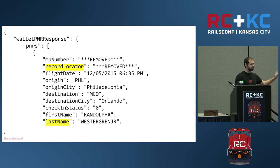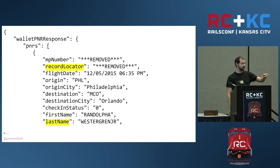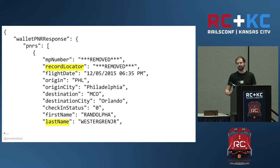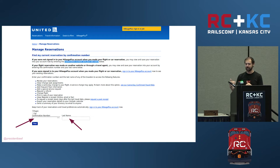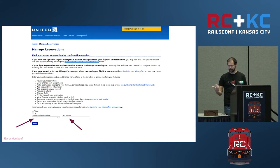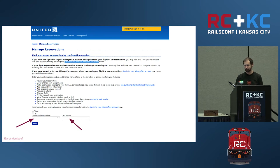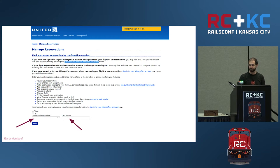He noticed in particular there's a record locator and a last name. What do you do when you check into a flight or need to look up a flight without an airline account? You put in your record locator and your last name. With just that number and last name you can look at reservations, change them, cancel them, get a receipt, and see the person's emergency contact information — for any Mileage Plus member number.